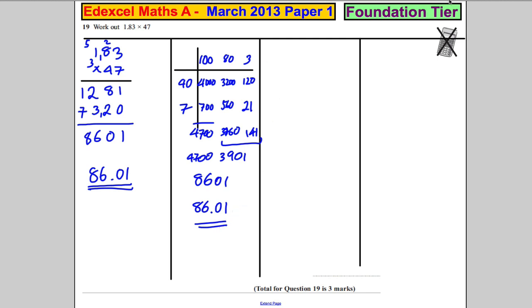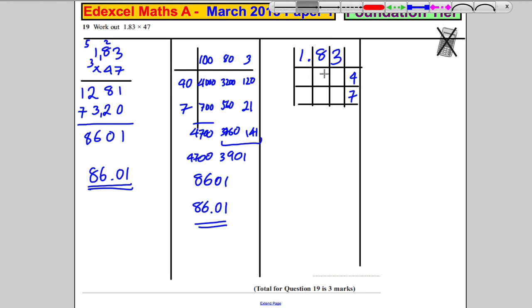That's another way of doing it. Some people use a lattice method. The lattice method. So we'd have along the top 1.83, and we'd have along the side 47. So let's just draw our boxes for that. And then what we're going to draw is we're going to draw some diagonal lines. So the diagonal lines go as follows.